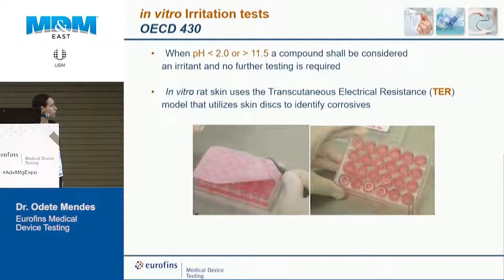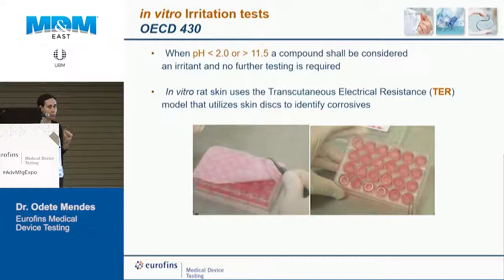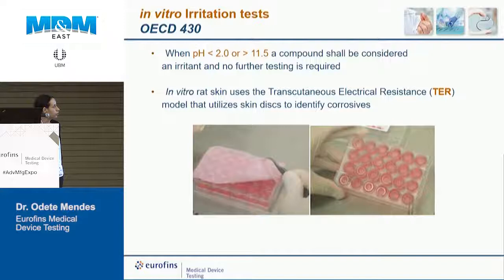If you already know your device has a pH below 2 or above 11.5 — acidic or basic — it is automatically considered a skin irritant and no further testing is needed. Otherwise, an irritation test must be performed. One in vitro option is described in OECD guideline 439, which uses the transcutaneous electrical resistance method to identify corrosives. Test substance or extract is applied for up to 24 hours and evaluated qualitatively or quantitatively using an MTT dye binding step.